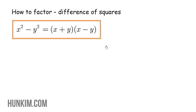Let's factor using difference of squares. The formula to memorize is x squared minus y squared equals (x plus y)(x minus y).